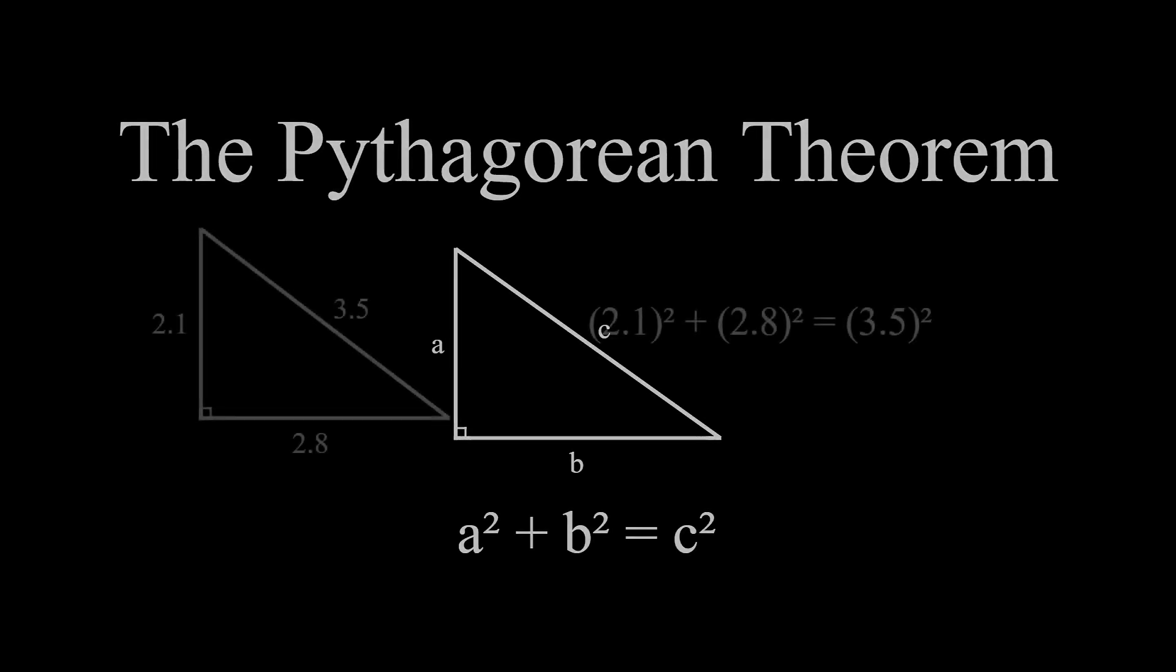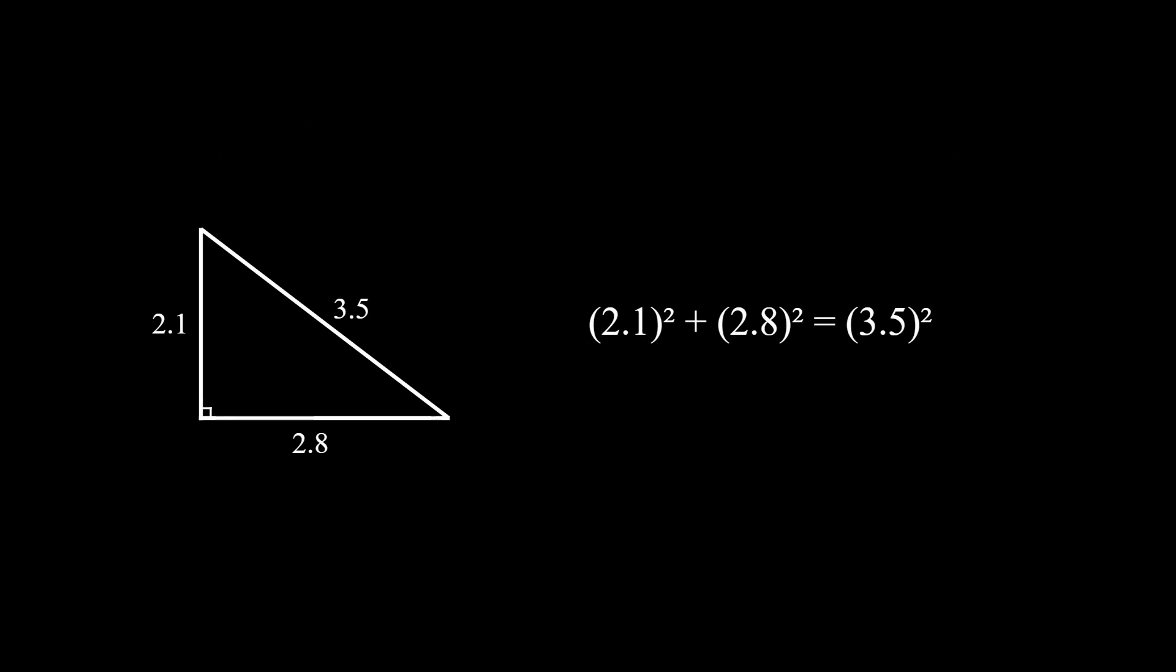There's this fact that if you have any right triangle, you take the lengths of the two sides that touch the right angle, square them, and add them together, and that's equal to the square of the third side.